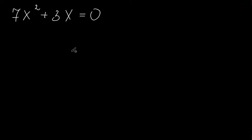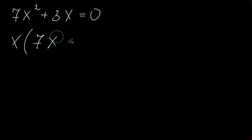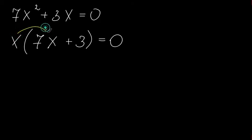The faster way is: in this case when we have x² and x, we take x before the parentheses. So it gives us x times (7x plus 3). If we multiply x by 7x and x by 3 it gives us the same expression as it was.